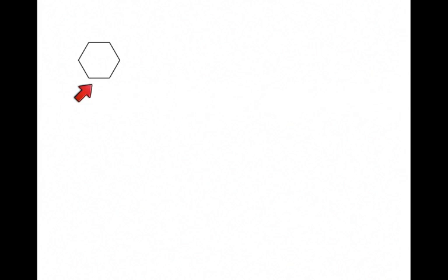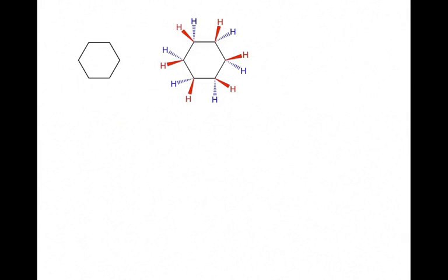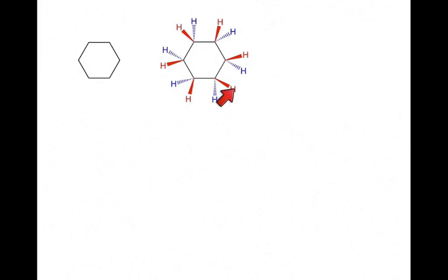First let's look at cyclohexane. We need to remember that all of these carbons are sp3 hybridized, so each of these six carbons has two hydrogens on it. Here we see a representation of that. All of the hydrogens drawn in red are wedges coming out of the screen towards us, and all of the hydrogens that are dashes are going away from us, back behind the screen.